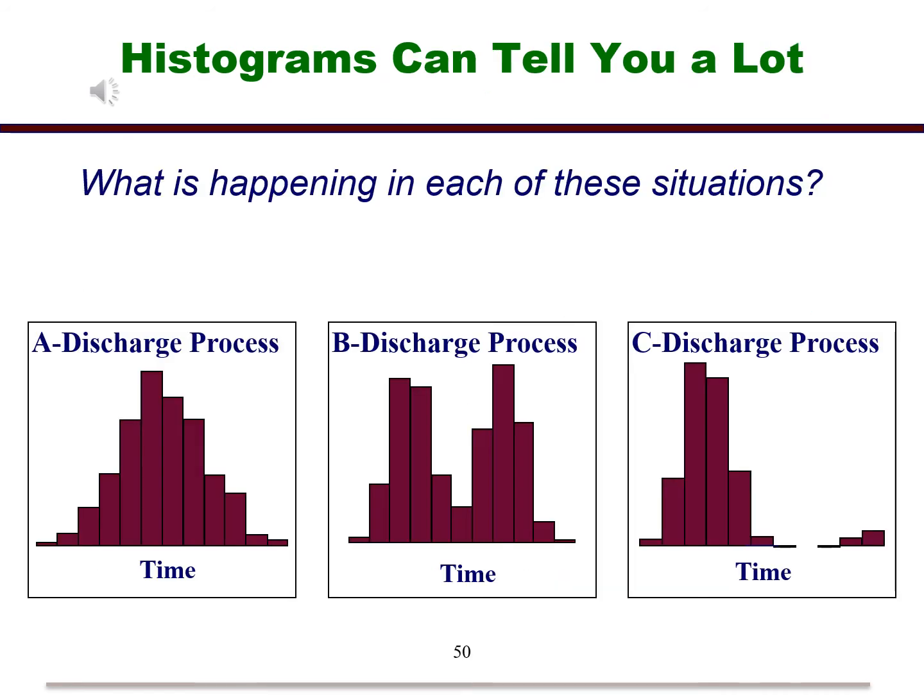Now, let's practice with some histograms. These are three situations where we have taken a sample of daily discharge times from a hospital. In the first situation, the data seems to be symmetric. This means that there is a distinct expected discharge time with a stable variability. This would be the ideal situation.